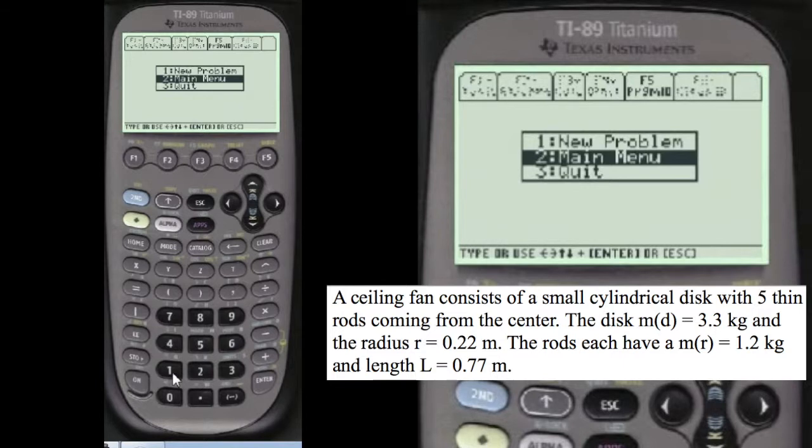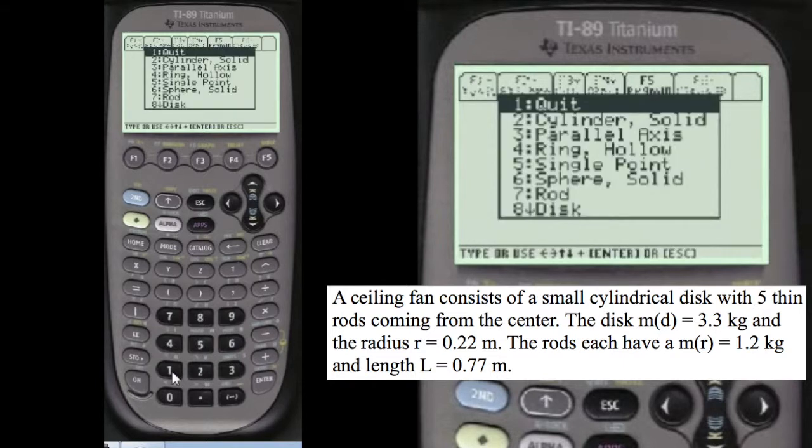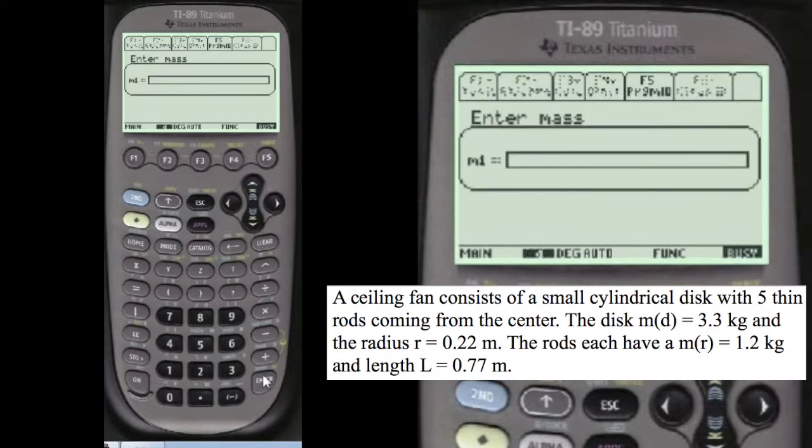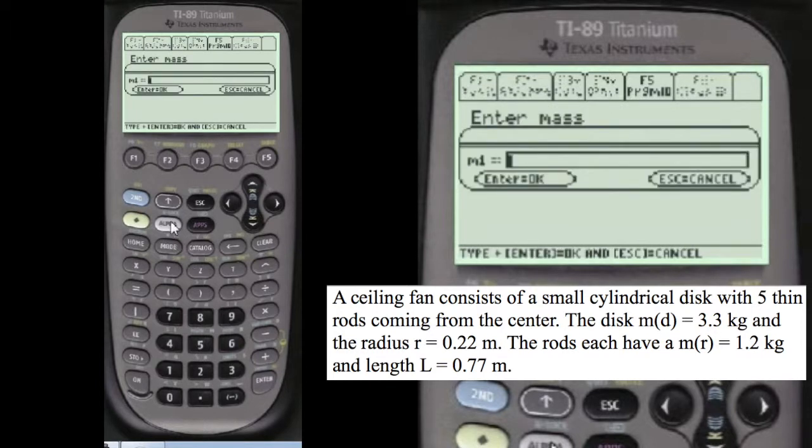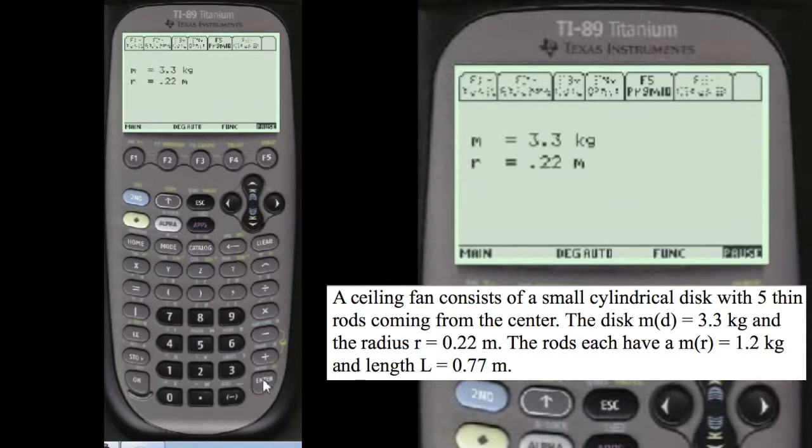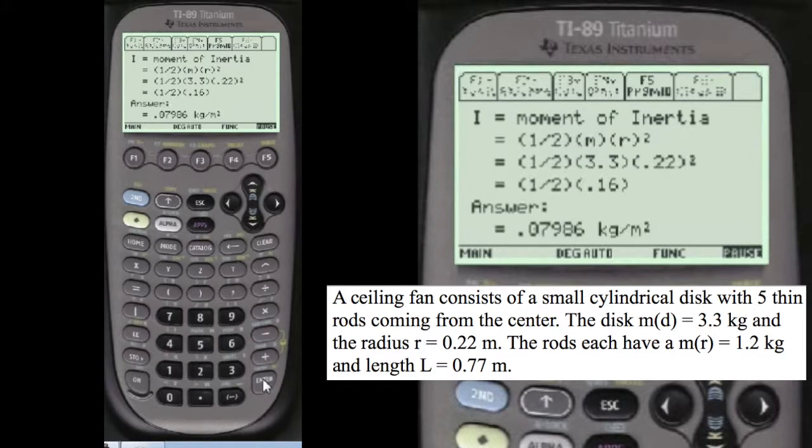Now we go back and do another problem, number one. We're asked to find the disc. So we go number eight. Alpha 3.3 kilograms. And the radius is alpha 0.22 meters, number three. I say it's okay. And there's the answer for that. You read all this stuff on paper, of course.